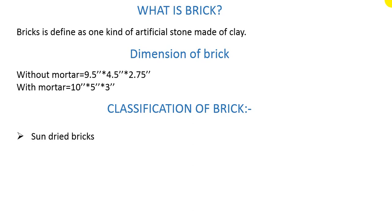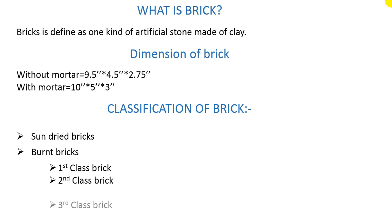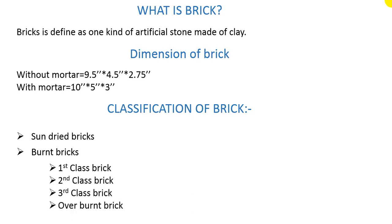Now the classification of bricks. Bricks are mainly of two types: sun-dried bricks and burned bricks. Burned bricks are further divided into four types: first class brick, second class brick, third class brick, and overrun brick. I will discuss every type and its uses.